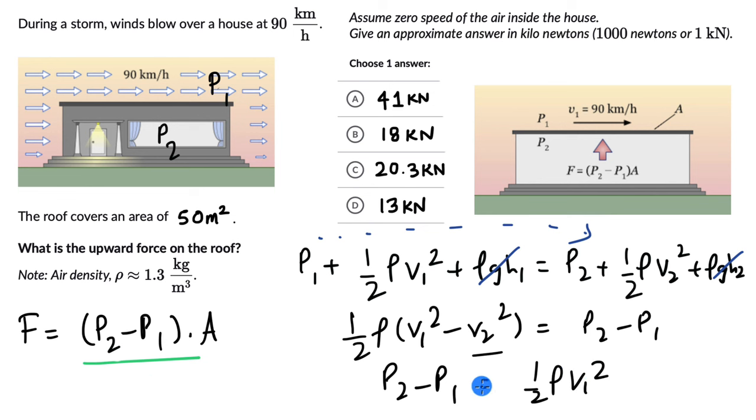If we substitute ½ρV₁² here, this will be ½ρV₁² times area. Now we know all the values: we know ρ is 1.3, we know V₁ is 90, and we know the area is 50. Why don't you plug in all the values and try to figure out the force.